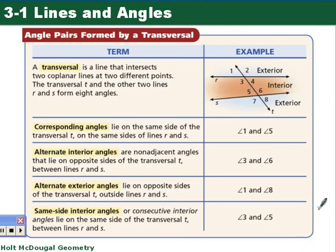The second angle definition is alternate interior angles. Alternate interior means they're on opposite sides of the transversal, but interior to the two lines. An example of alternate interior angles would be angle 3 and angle 6.